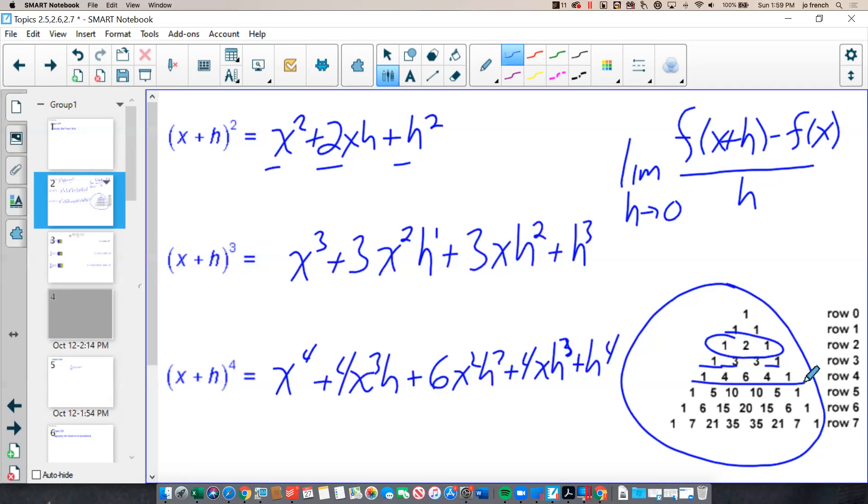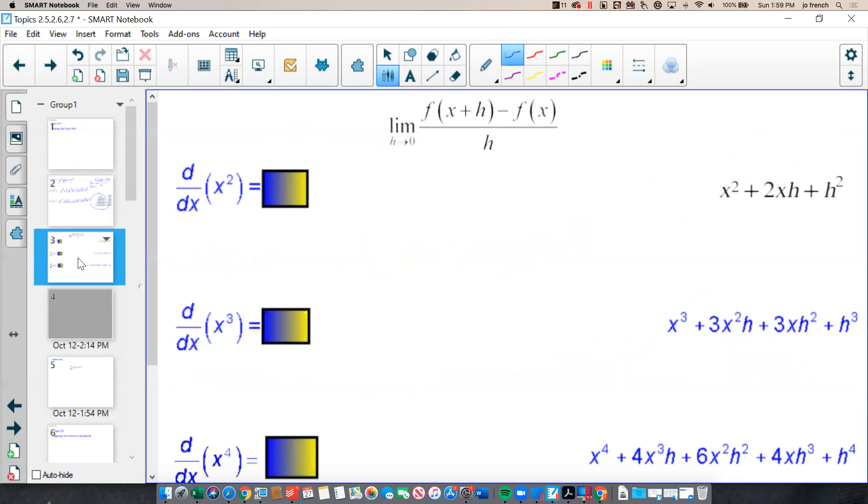These terms, or these expressions, will help us determine the derivatives of x squared, x cubed, and x to the 4th, using our definition of derivative, our limit of our difference quotient. So, we end up, for derivative of x squared, we would have the limit,